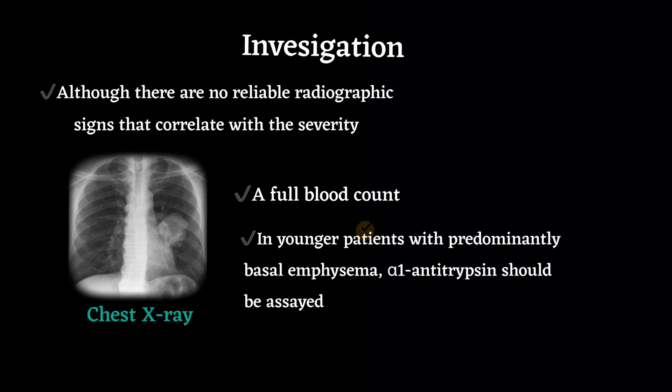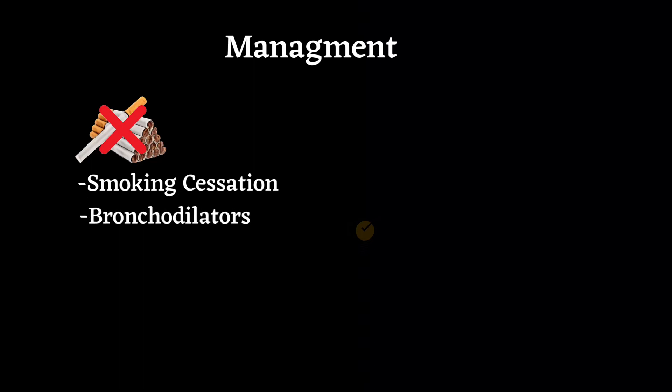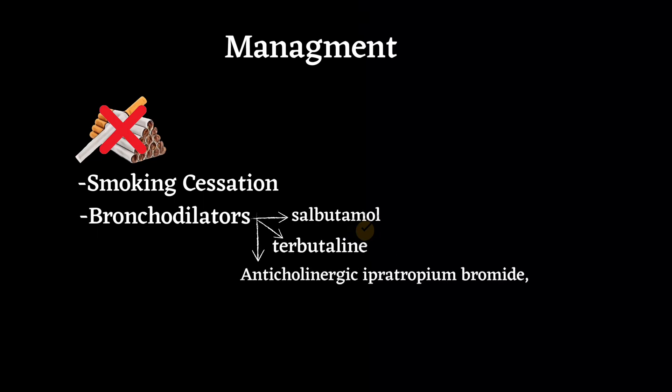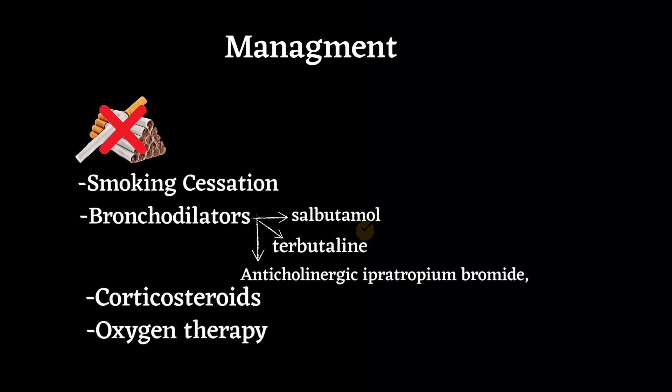Management: first, smoking cessation — every attempt should be made to highlight the role of smoking in the development and progression of COPD, advising and assisting the patient towards cessation. Bronchodilator therapy is central to the management of breathlessness; the inhaled route is preferred. Short-acting bronchodilators such as the beta-2 agonists salbutamol and terbutaline, or the anticholinergic ipratropium bromide, are used. Corticosteroids are used in severe cases, and oxygen therapy in special cases.